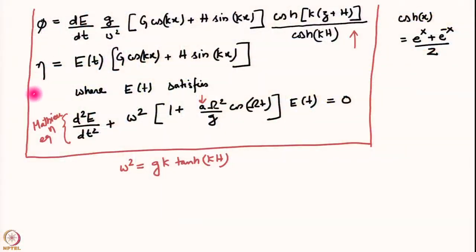We were looking at the stability of an interface on a pool of liquid which was subject to vertical vibrations. We had done the analysis in the last video and found that the time dependence of the interface is governed by the Mathieu equation. We had looked for standing wave solutions and obtained expressions for the perturbation velocity potential and the perturbation on the interface eta. The time dependence E(t) is governed by this equation — the Mathieu equation encountered earlier in the course.